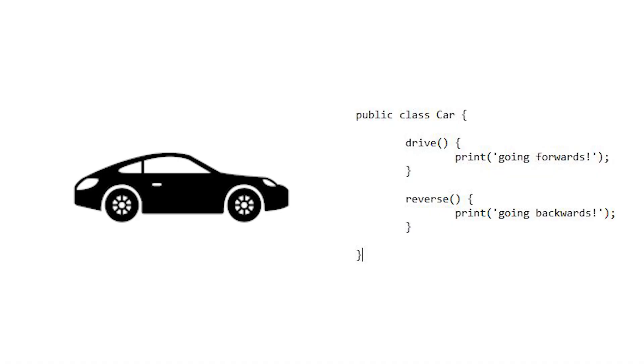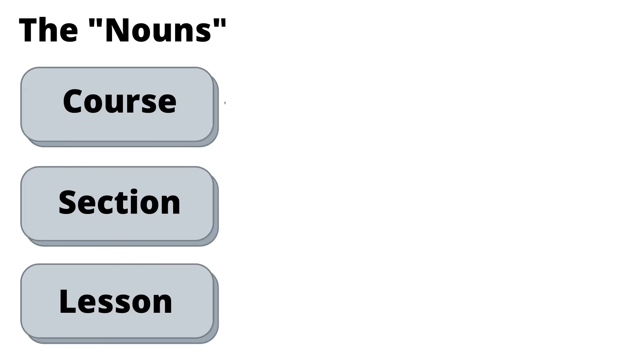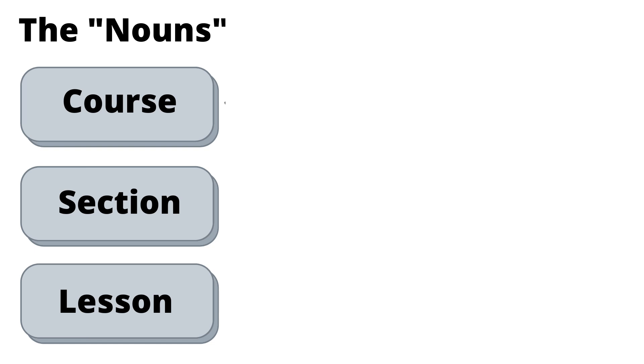Object-oriented programming is basically taking the real world and mapping it to your code. This allows you to think about your code in a more logical fashion — something that makes sense to the human brain. A good example: within my golf app I have a training portal where people can take courses. Within that web app you have different pieces — not only the video, but the course itself, the section, and then the lesson within the section. These are all the nouns of this web app.